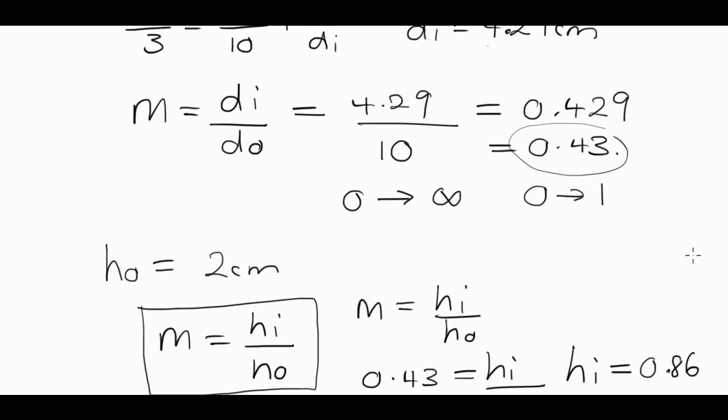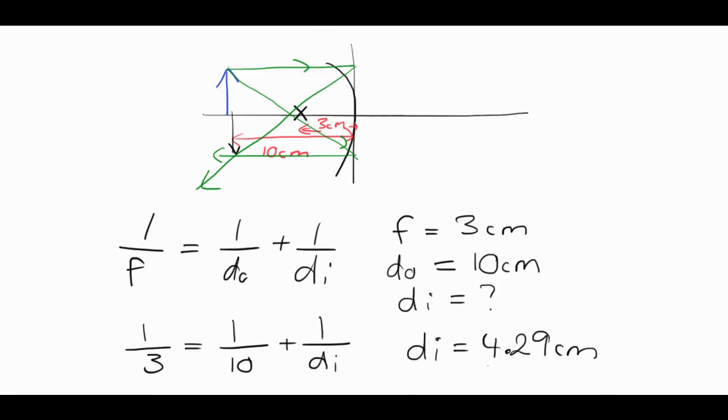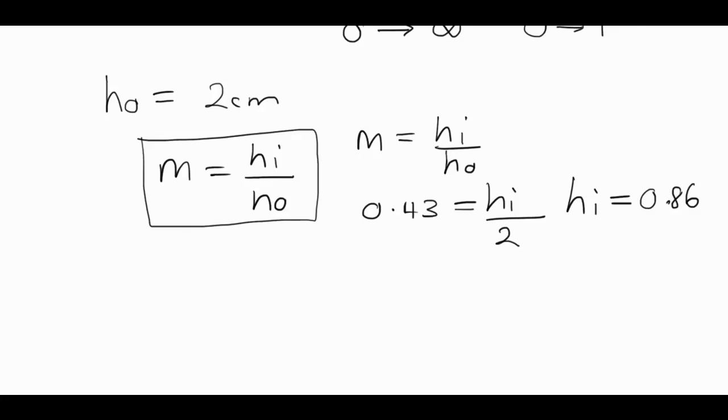So looking at that, we can see that the object height is less than the image height, which makes sense because of the magnification here being 0.43. So that's probably going to get you, I don't know, somewhere between achieved merit for doing similar questions. Now, I want to give you a slightly different scenario to show you how this can change. Let's imagine that for the same mirror, so it's a concave mirror, we have a focal length of 8cm, and we have an object distance of only 4cm.